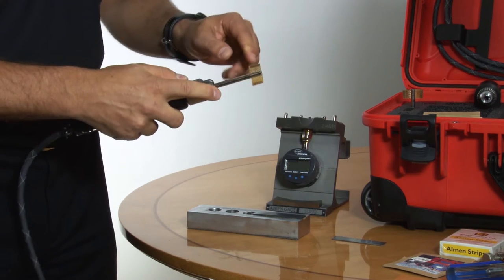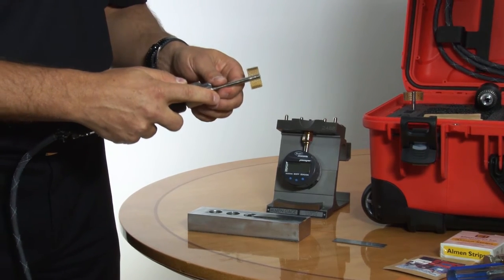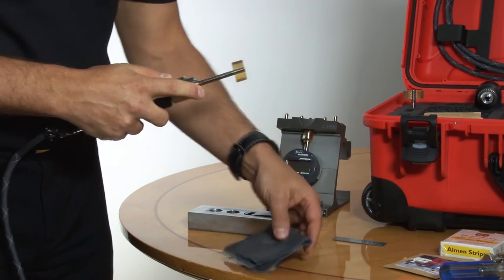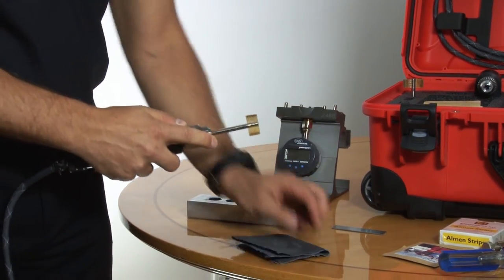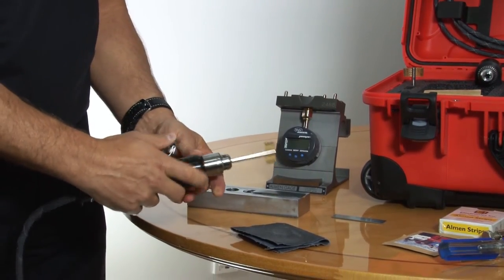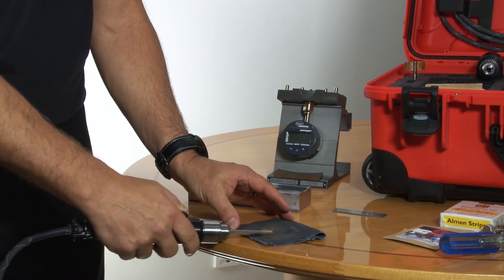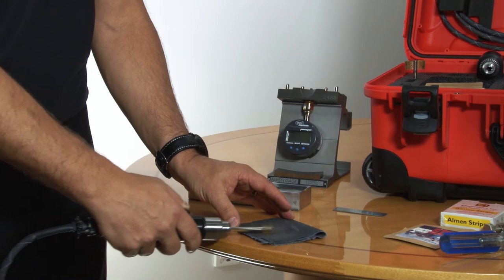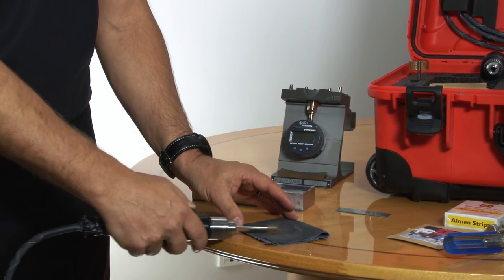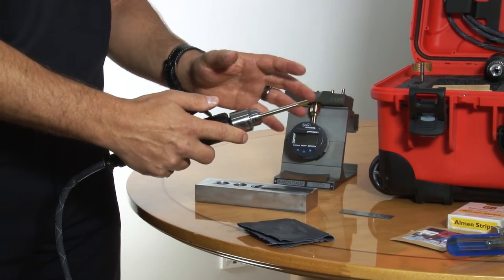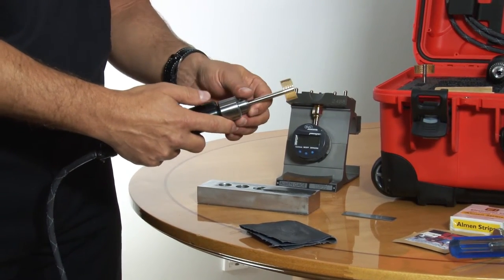Sometimes there's some residue on the media that are on the flap. What you can do is take a piece of sandpaper and flapper peen the sandpaper to remove the residue on the flap. Doing this for 15-20 seconds will be enough to remove the residue.